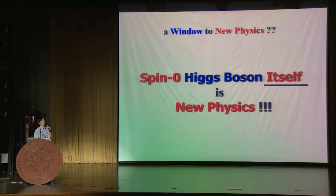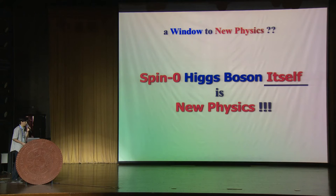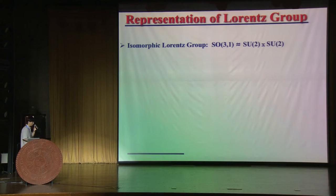Even with no new physics found beyond the 125 GeV Higgs boson, I would take the most conservative approach and say: if we just have this 125 GeV Higgs boson and nothing new beyond that, I claim the spin-zero Higgs boson is very unique. By itself, it is already an indication of new physics. I will try to provide some evidence for this claim.